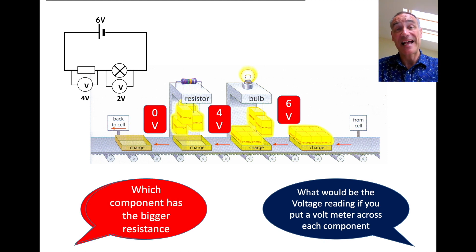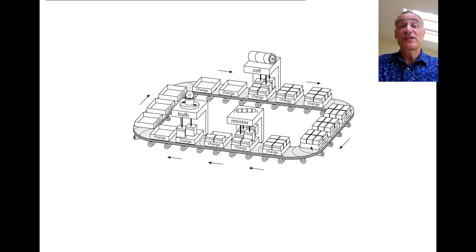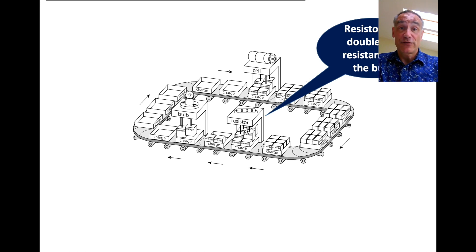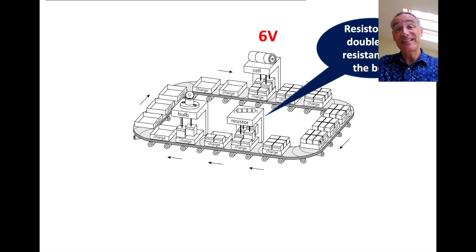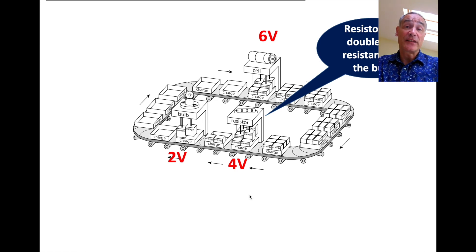Finally, which component do you think has the bigger resistance and why? The resistor takes a bigger share of the energy, so it's got the higher resistance. So we've got the whole circuit: our resistor with double the resistance, our cell of six volts, our charges carrying six joules of energy - six boxes of cereal - our resistor taking four of those joules, and our bulb taking the last two joules of energy. The voltages add up.